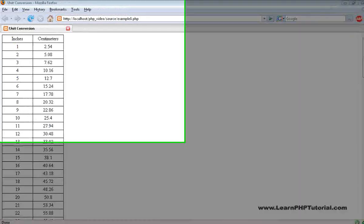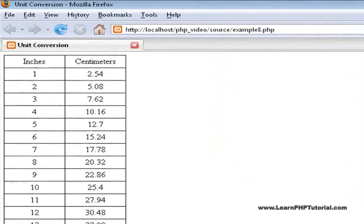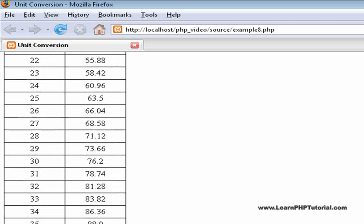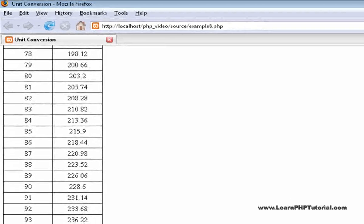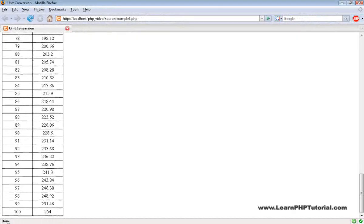Looking at example 8 in our browser, we see that for each value in inches, there's a corresponding equivalent value in centimeters. This table contains 100 values, ranging from 1 through 100.